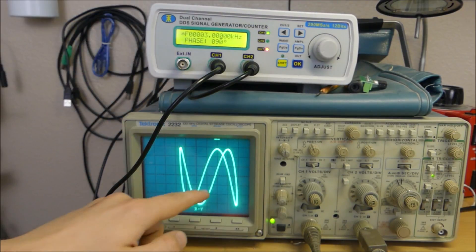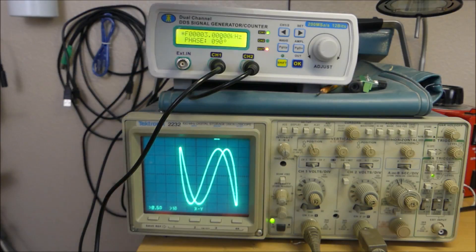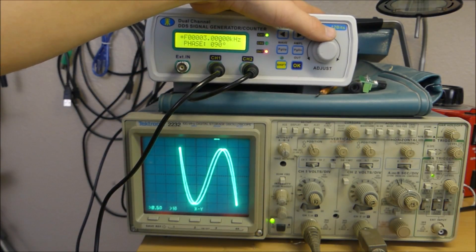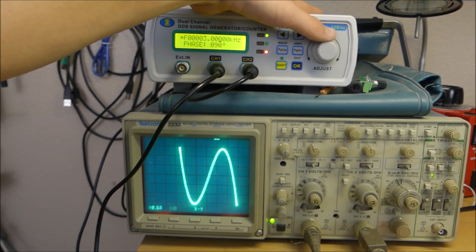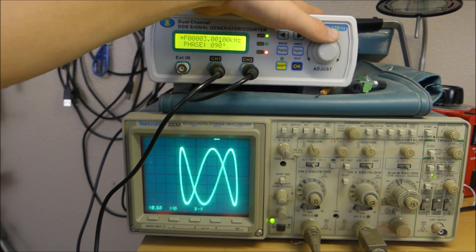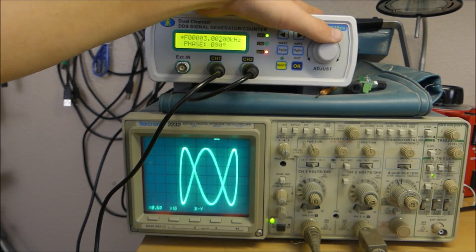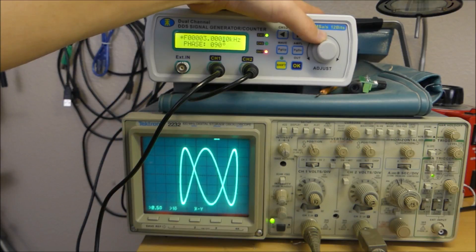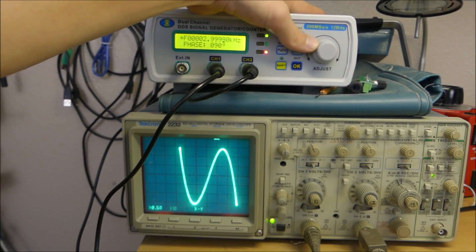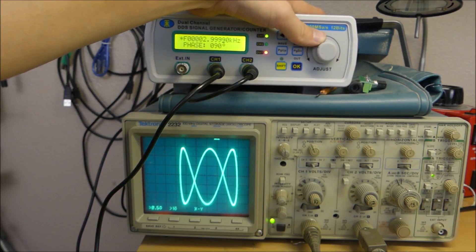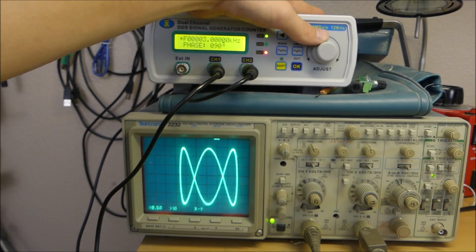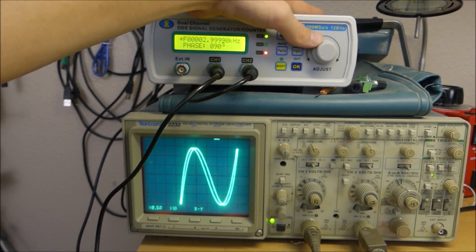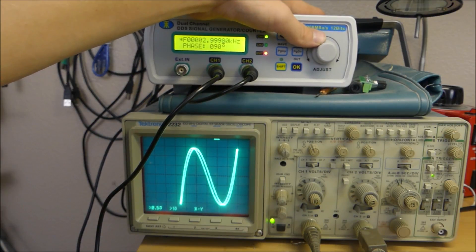As you can see it is 3 kilohertz exactly on both channels and the picture is perfectly stationary. If I decrease this down to 3001 Hertz it spins. Set it to 3002 Hertz it spins faster. If I set it to 3000.5 Hertz you can see it spins extremely slow. You can fine-tune it so it doesn't spin anymore or I can line it up and make a perfect looking sine wave.